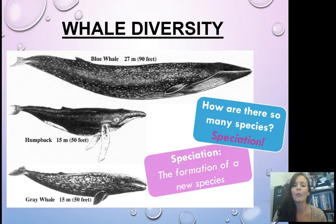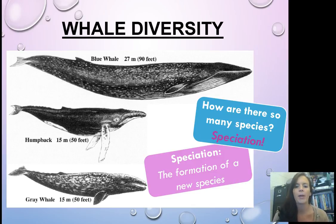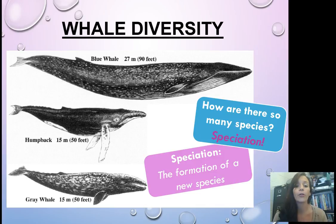So first of all, whale diversity. So how are there so many different species of whales? The answer is speciation. Speciation is just the formation of a new species. So if you look at this slide, there's things like the blue whale, the humpback whale, or the gray whale. They all have very different things about them, but they are at the same time all whales.